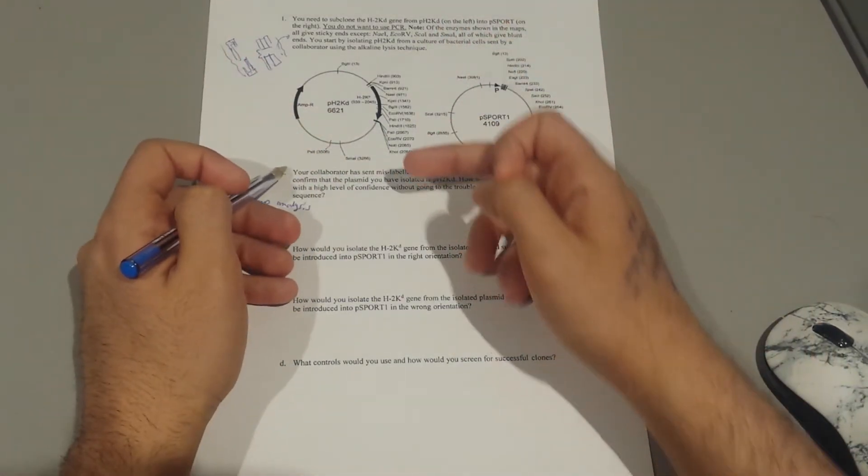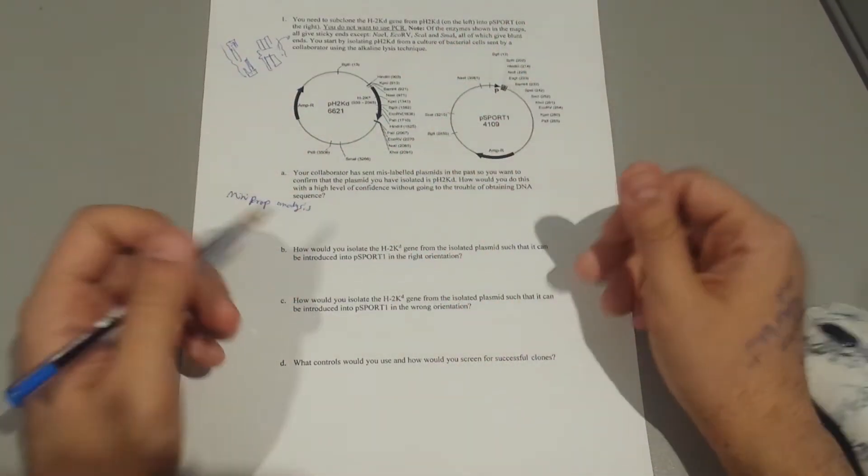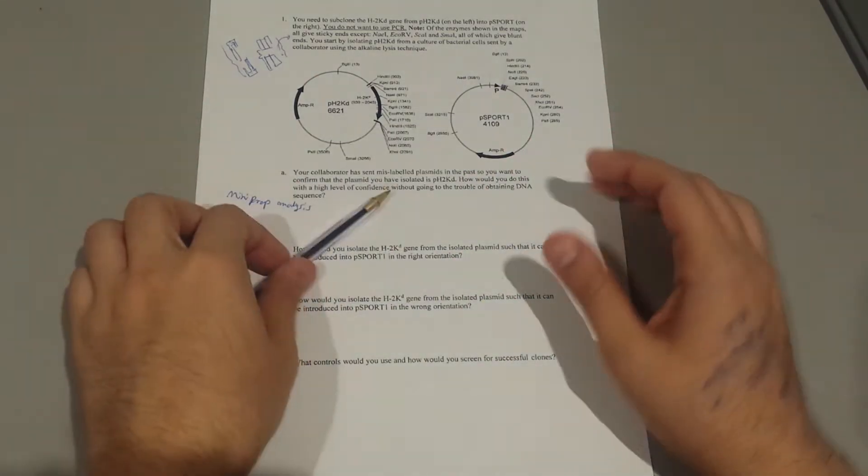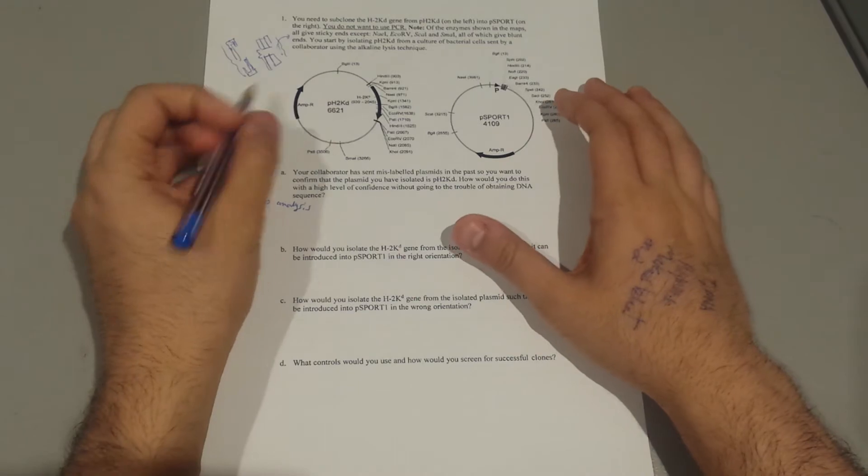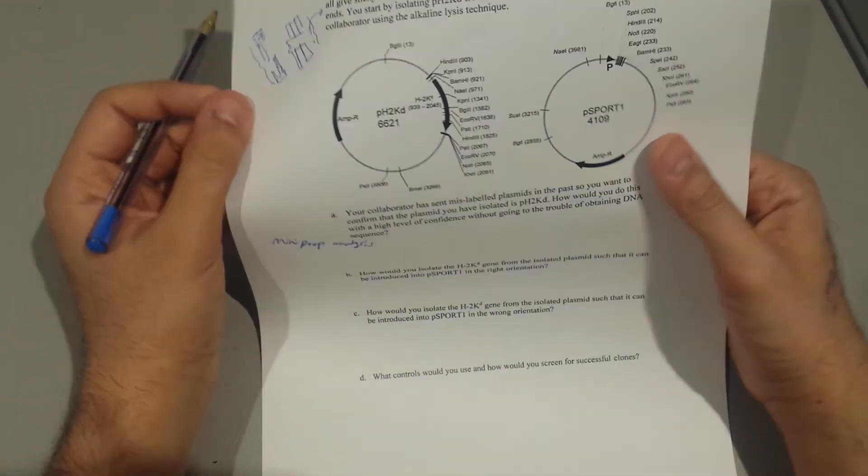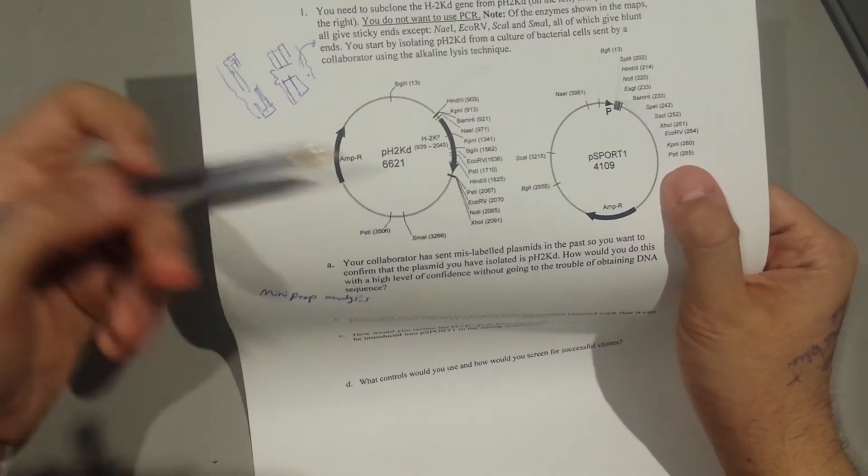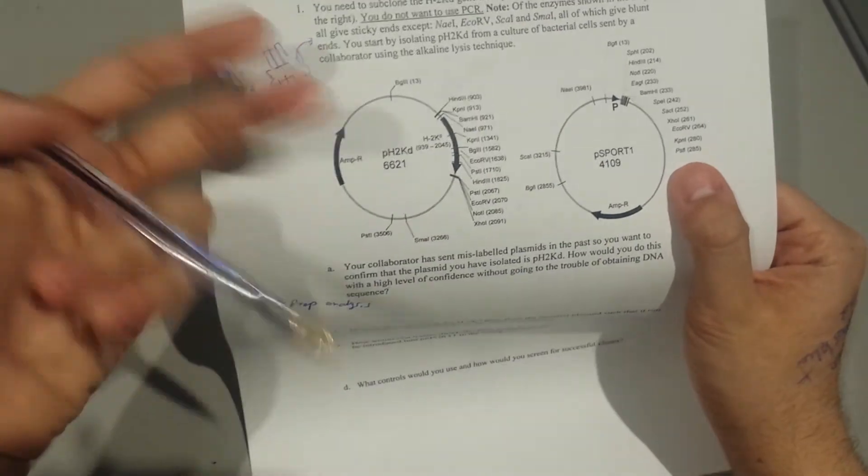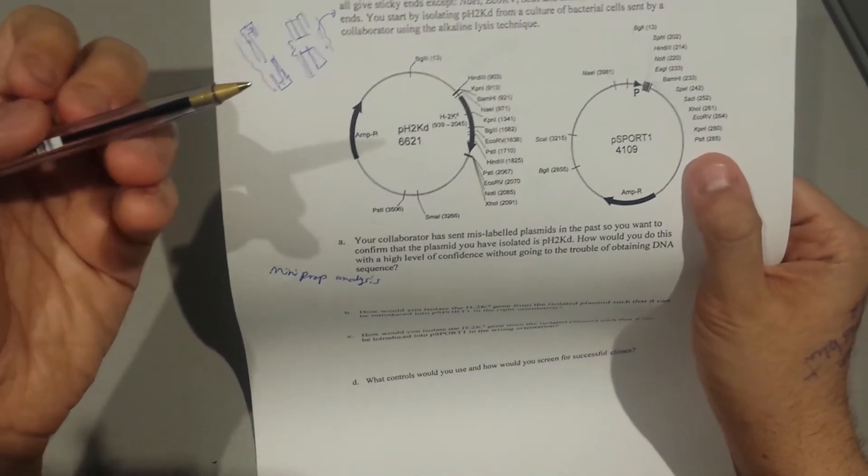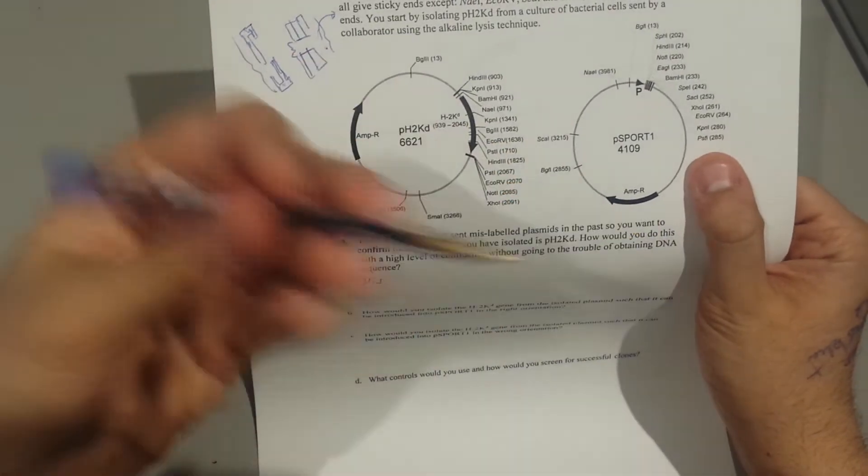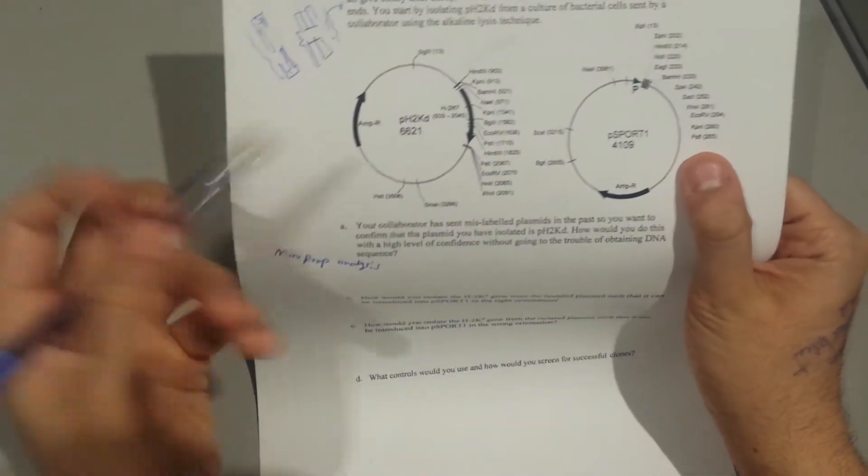So the question is asking which enzymes you're going to use to give you the best quality answer. You want to find specific enzymes that give you two fragments, two sites, because if you have two sites, this means you'll have a unique fragment size.